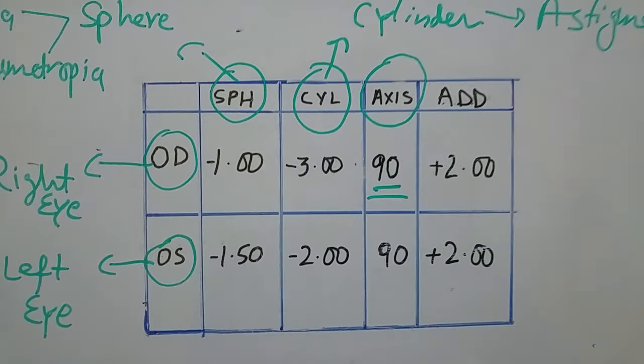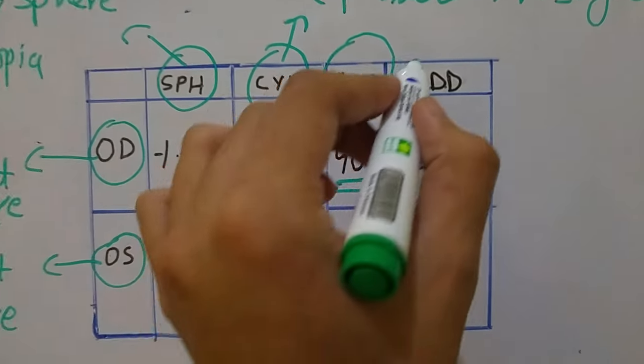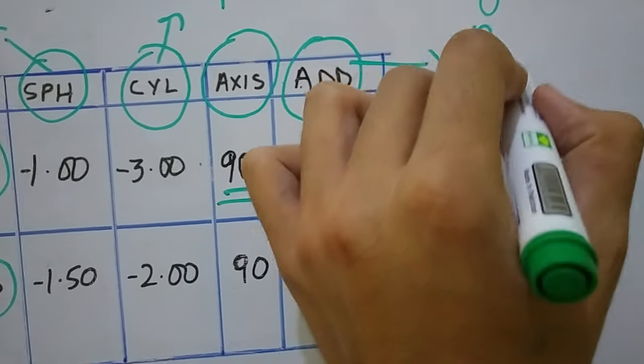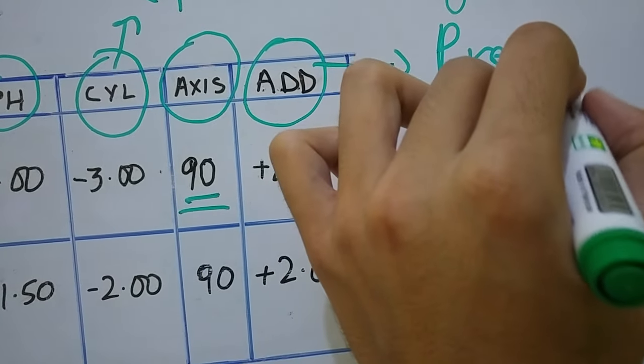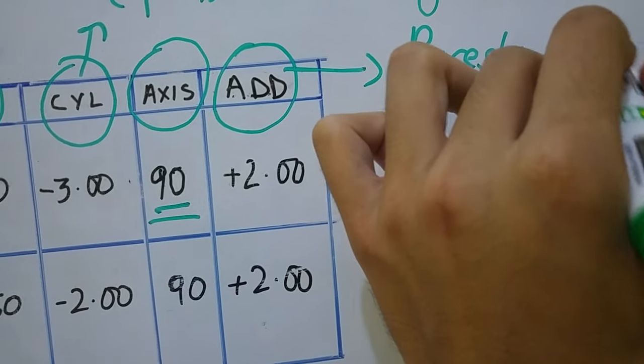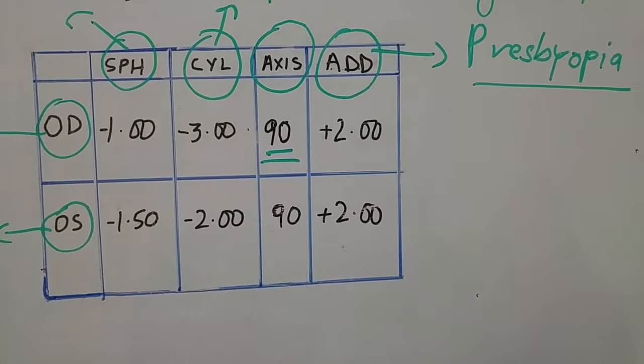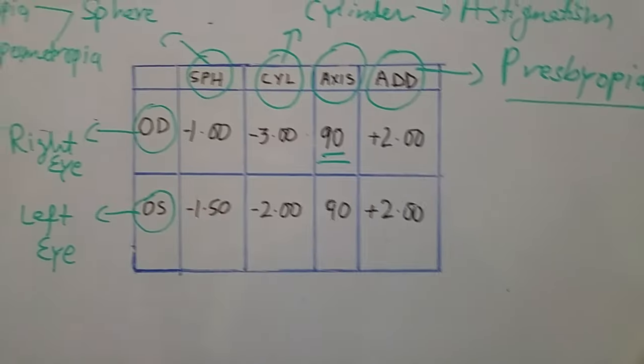And then in the last there is ADD. This is for presbyopia. This is usually required after 40 years of age for near vision tasks.